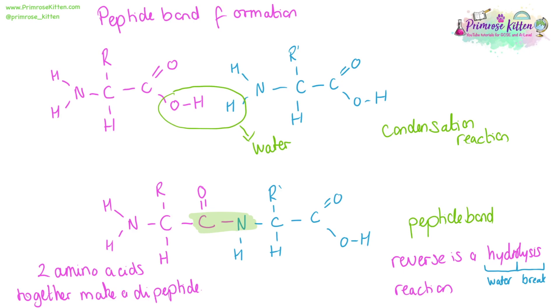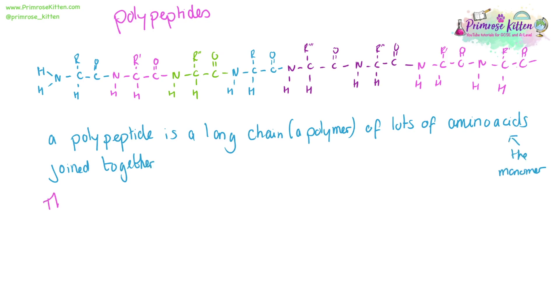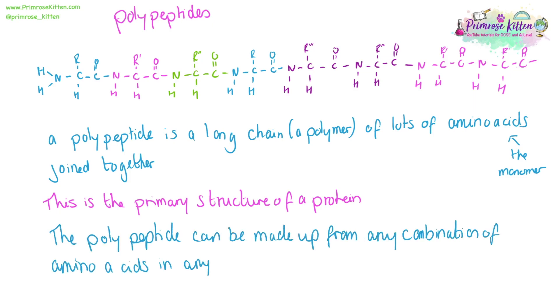Two amino acids together will make a dipeptide. A chain of lots of amino acids is going to be a polypeptide — this is the polymer to the monomer that is the amino acid. They are all going to be joined together by peptide bonds. The polypeptide chain is the primary structure of any protein and can be made up from any combination of amino acids in any order.